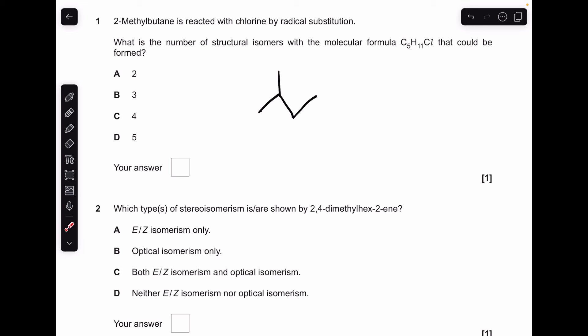So there's 2-methylbutane. If this reacts with chlorine by radical substitution, and we are limited to monosubstitution, there's only one chlorine gone on. So how many different structural isomers can we have? Well, the chlorine can go on these carbons here. So they're equivalent to each other. So 1, 2, 3, 4. So C was the answer.